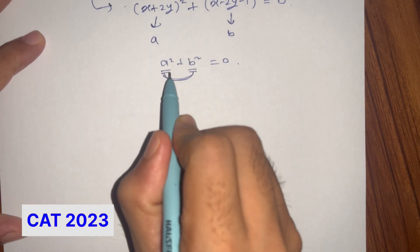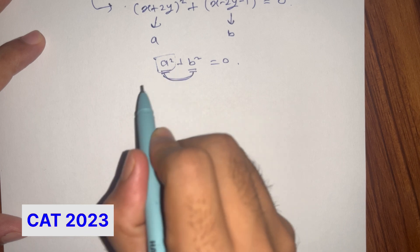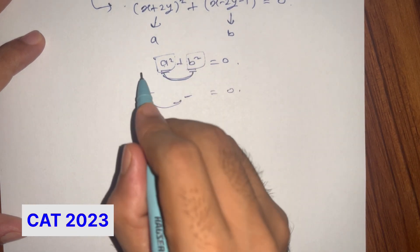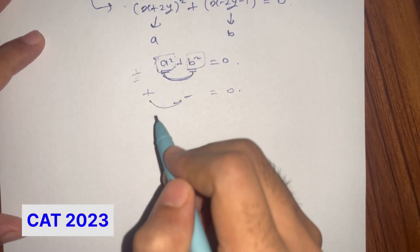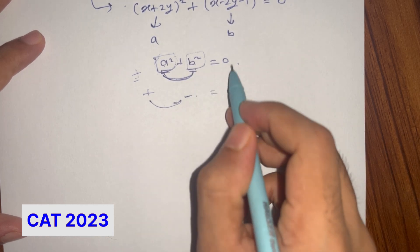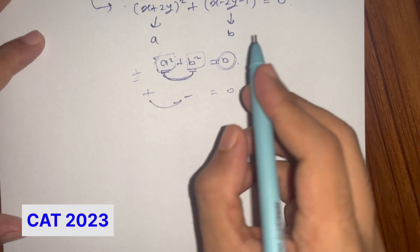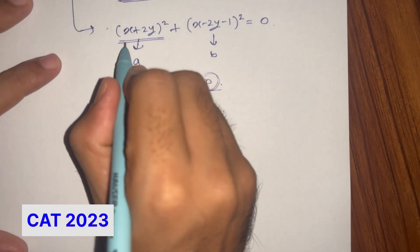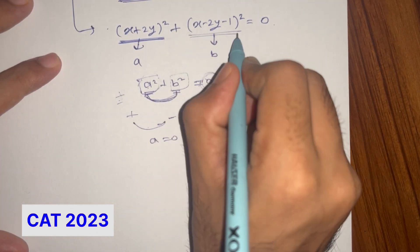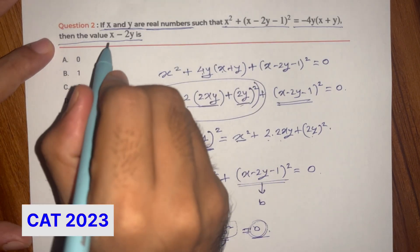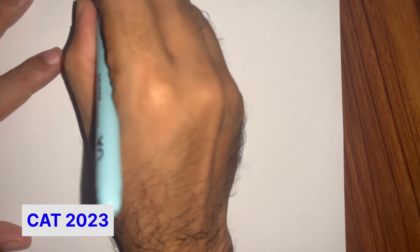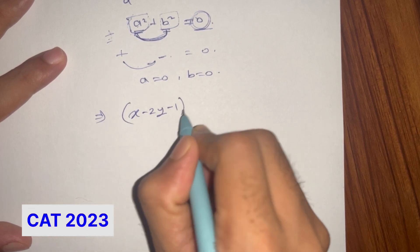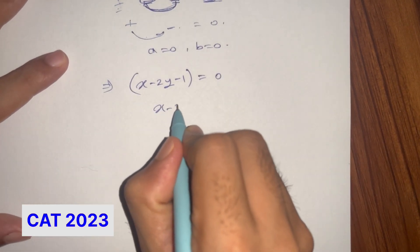Is it possible that A squared is positive and B squared is negative? That is impossible, because the square of any real number is non-negative. The only case where A squared plus B squared equals 0 is when A equals 0 and B equals 0. So (x plus 2y) whole square equals 0 and (x minus 2y minus 1) whole square equals 0. From the second equation, x minus 2y minus 1 equals 0, which means x minus 2y equals 1.